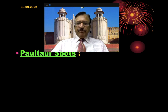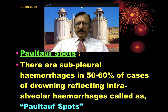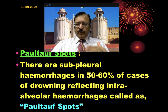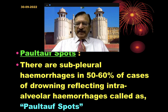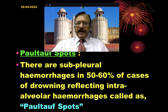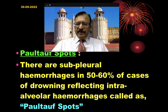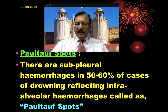An important sign is Paltauf's spots. There are sub-pleural hemorrhages in 50 to 60% of cases of drowning, reflecting intra-alveolar hemorrhages which are called Paltauf's spots. These Paltauf's spots are specific for deaths due to drowning and result from intra-alveolar hemorrhages.